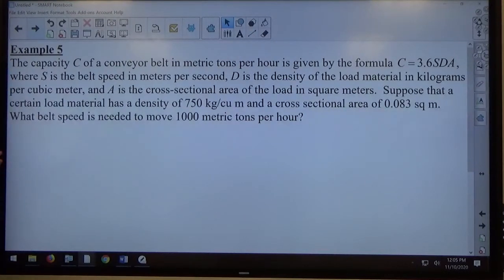Look at example five, now we've got things to read. Notice if we read this carefully, the capacity C of a conveyor belt in metric tons per hour is given by the formula C equals 3.6 SDA.